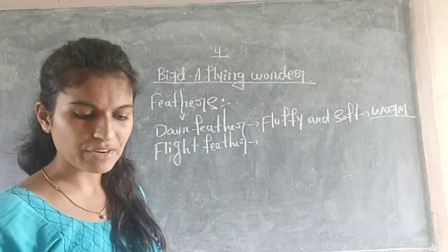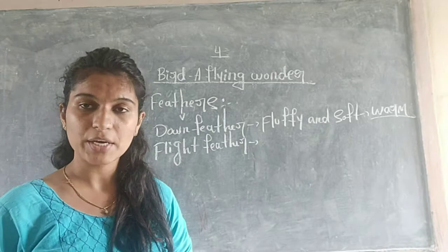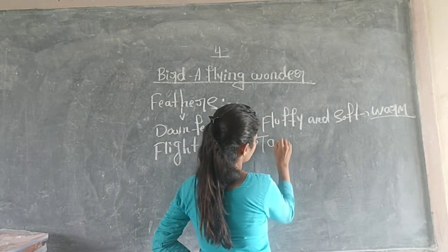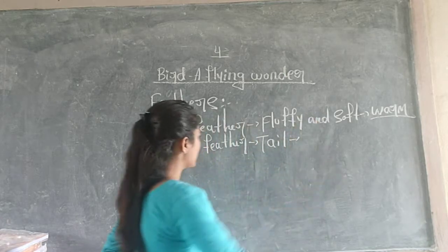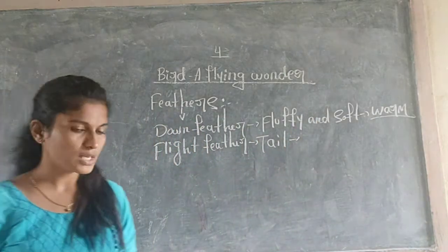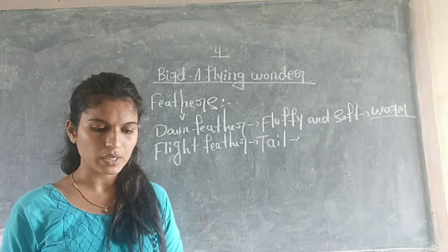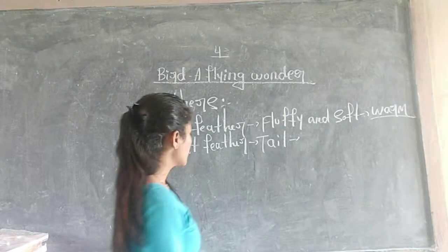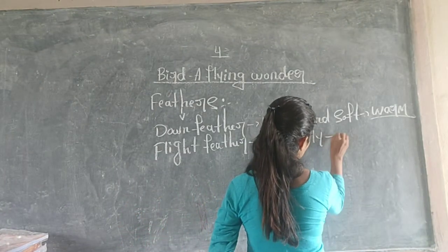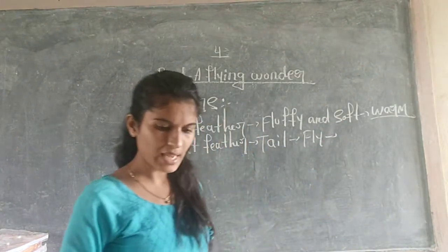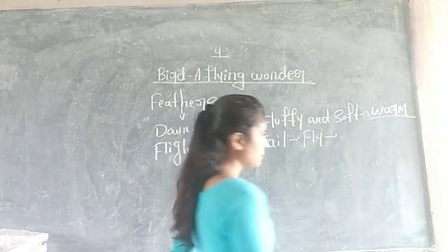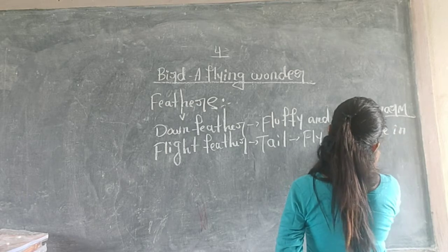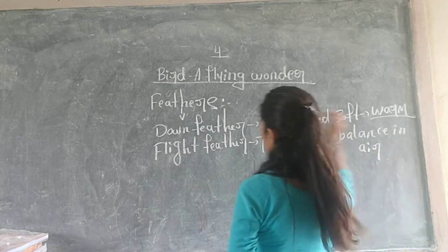About flight feathers: you can find the flight feathers in the tail and wings of a bird. These flight feathers help the bird to fly and also to balance their body in the air.